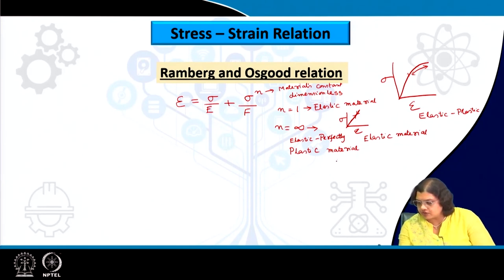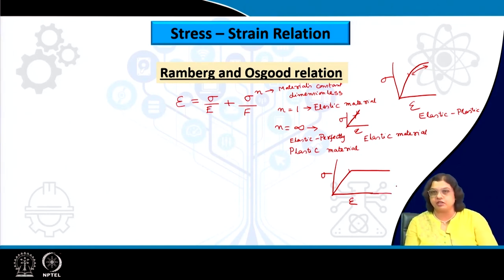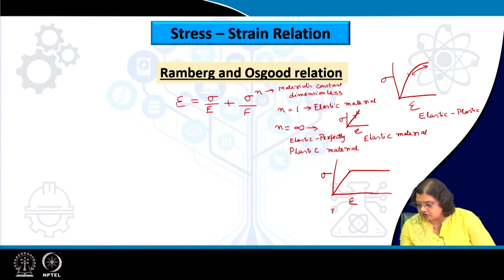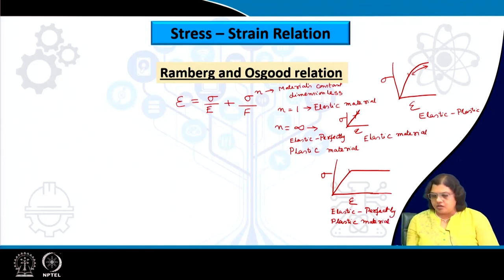For elastic perfectly plastic material the stress-strain curve yields and then has a perfectly horizontal relationship with strain, meaning there is no enhancement in stress values any further. A common example of an elastic perfectly plastic metallic material is titanium.